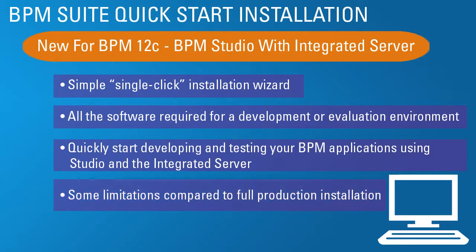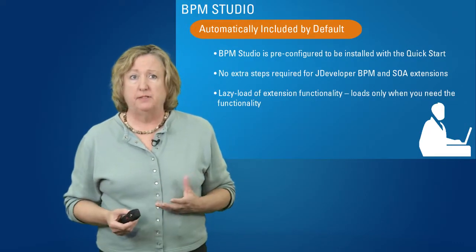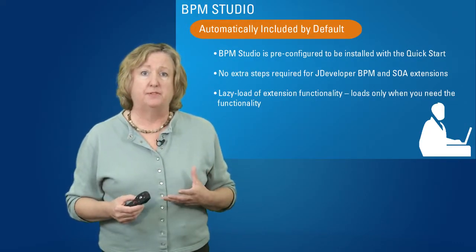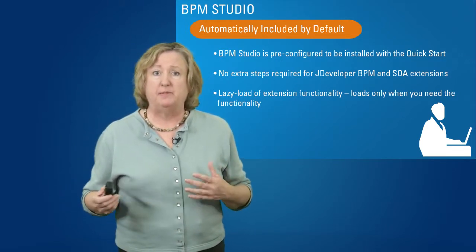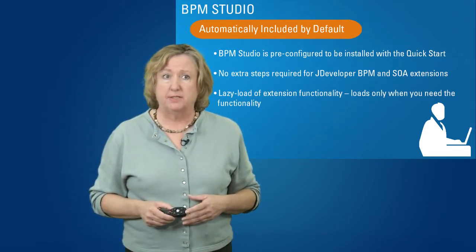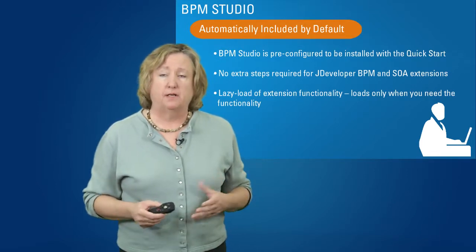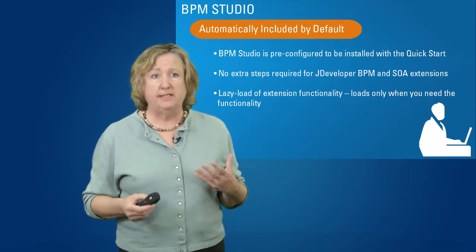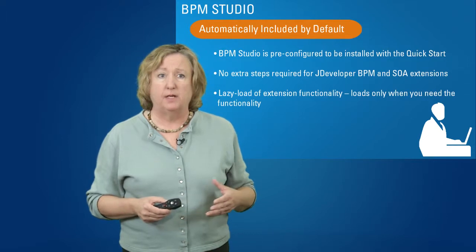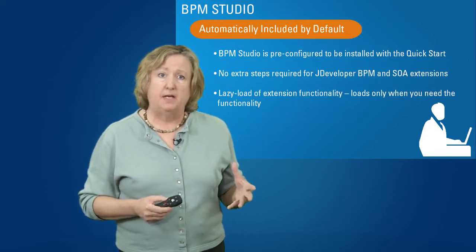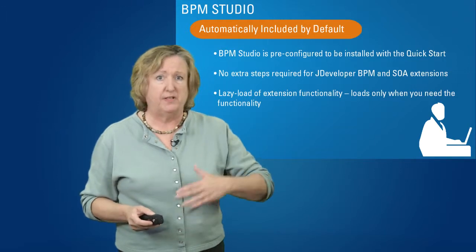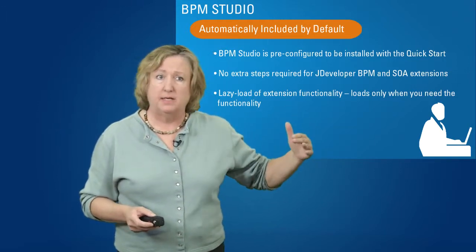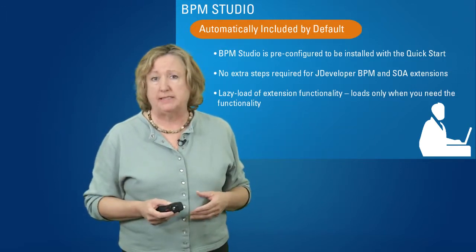There are some limitations, so we're going to talk about those on the following slides. BPM and SOA JDeveloper extensions are automatically included by default — you do not have to do any extra steps. It's pre-configured automatically. You get a lazy load of extension functionality, so the extensions in the template are only actually loaded when you first start using that functionality. It's a very quick startup.